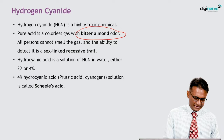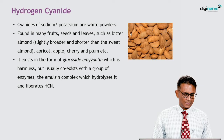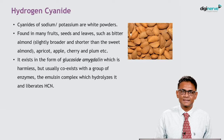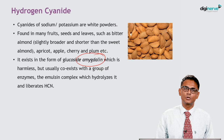4% hydrogen cyanide is known as prussic acid. Cyanide — potassium or sodium cyanide — are white powders found in many fruits, seeds, and leaves such as bitter almond, apricot, apple, cherry, and plum. They exist in the form of a glucoside called amygdalin, which is a harmless chemical but coexists with a group of enzymes known as the emulsin complex, which hydrolyzes and liberates HCN.